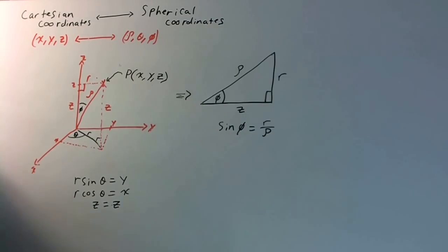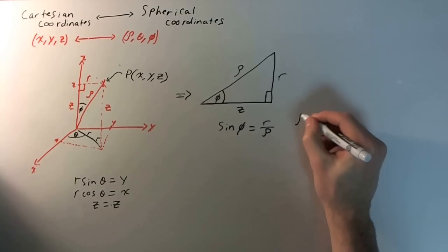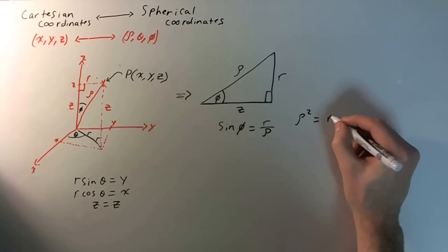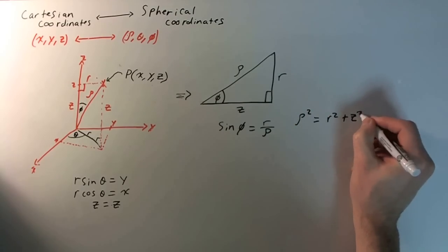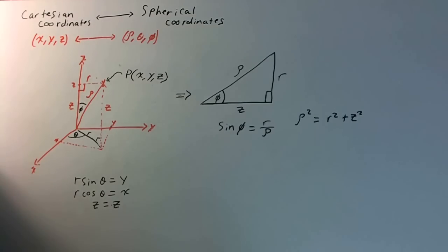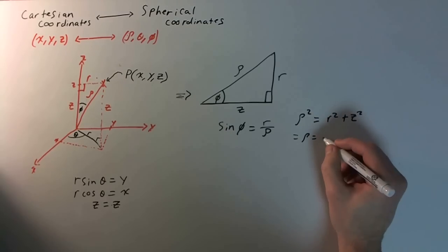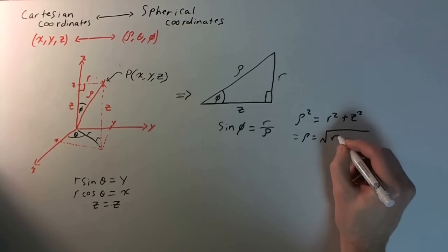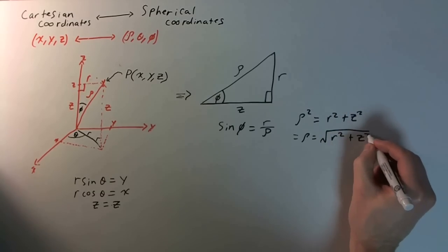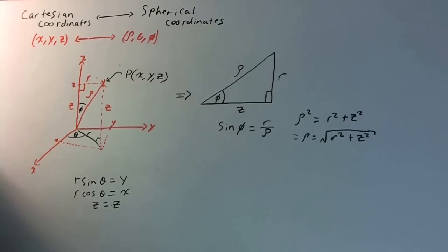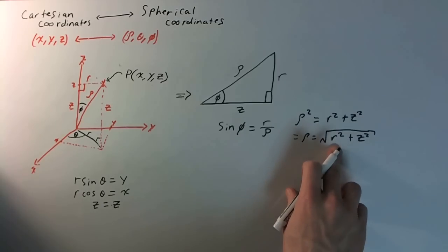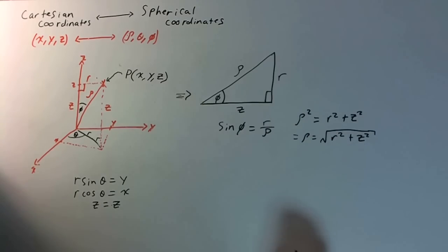And we also know the fact that rho squared is going to be equal to r squared plus z squared. And we can obviously solve for this and get rho is going to be equal to the square root of r squared plus z squared.